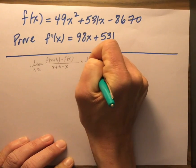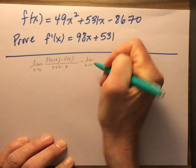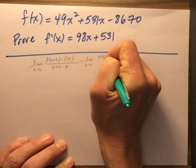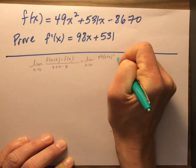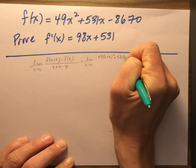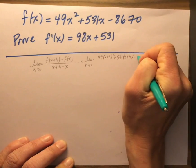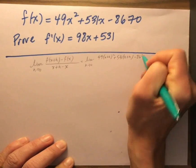So I'm going to work this out, and I'm going to plug in my f of x. So I'll have a 49 times x plus h squared plus 531 times x plus h minus 8670.